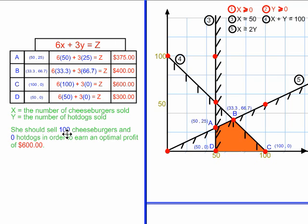And that is the way you should answer the question. Make sure to include the value for x and the value for y of the vertex that gives you the largest dollar amount, but also include the amount of profit, the $600 in this case.